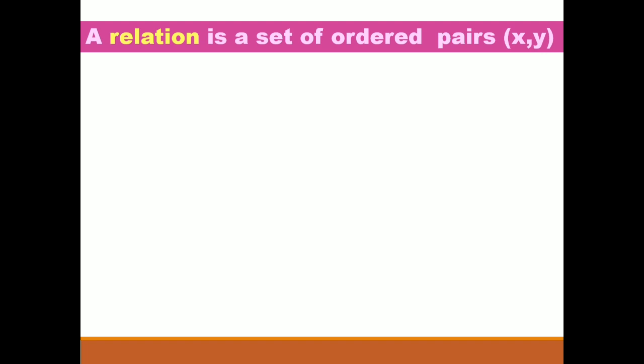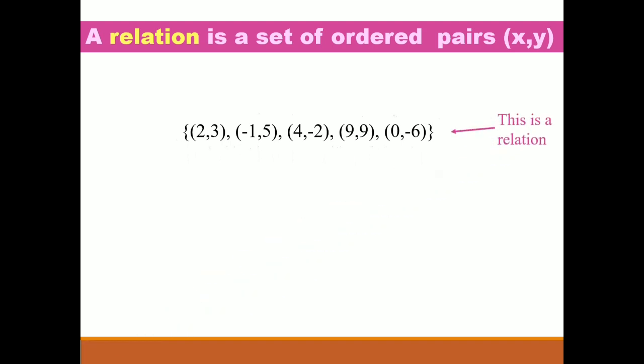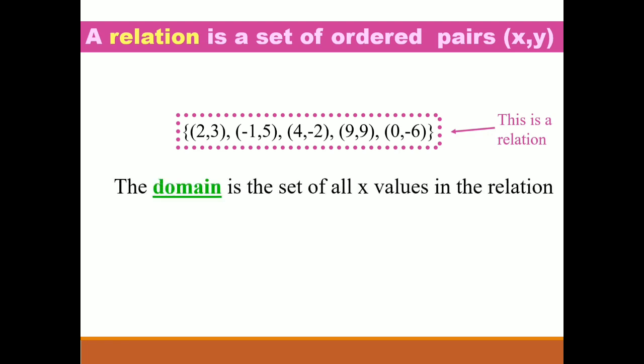A relation is a set of ordered pairs. We denote an ordered pair by (x, y). An example of a relation: (2, 3), (-1, 5), (4, -2), (9, 9), (0, -6). The domain is the set of all x values in the relation.